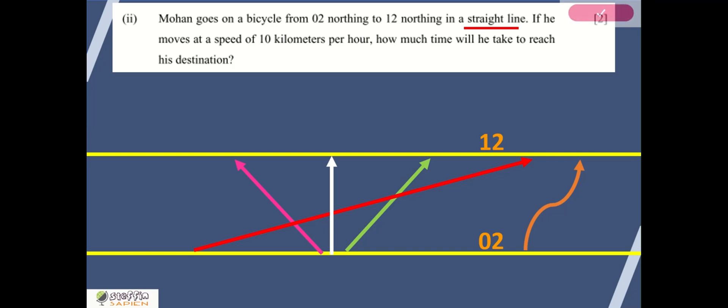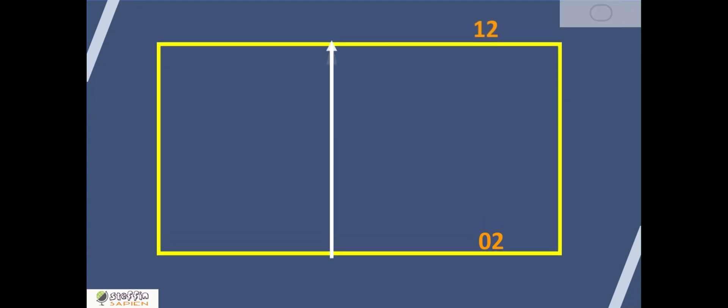But for the sake of doing this, let's imagine Mohan is traveling along an easting from 02 to 12 northing. He is traveling in a north direction. This is the direction in which Mohan is traveling from 02 to 12. We know that the distance between two nearby northings is 1 kilometer. Mohan is traveling from 02 to 12, which means he is traveling 10 kilometers.